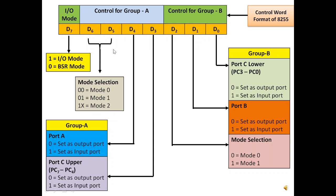D7 bit is reserved for IO mode. If it is 1, the entire 8255 will work in IO mode. If it is set to 0, the 8255 will work in bit set reset mode. How 8255 works in bit set reset mode will be taken up in the next lecture.